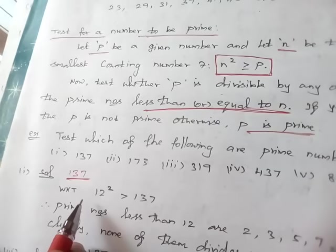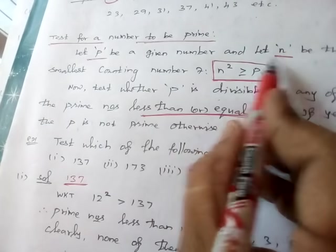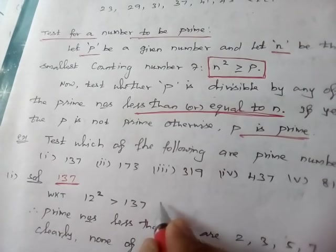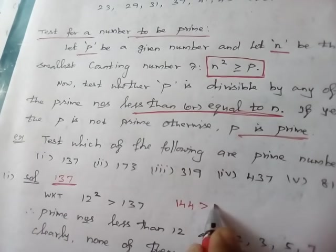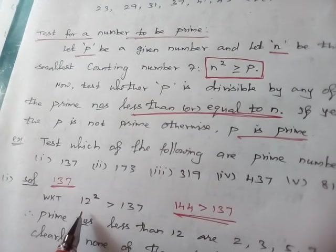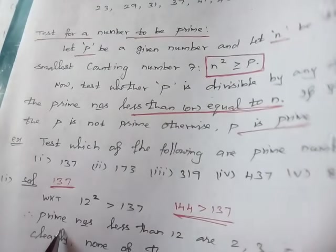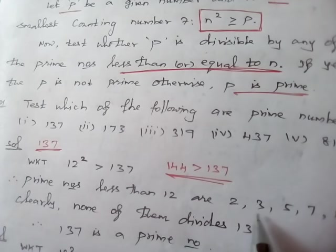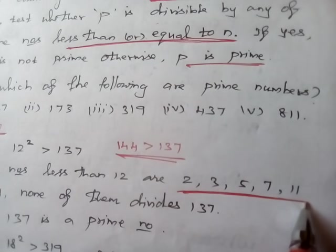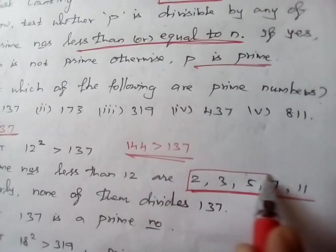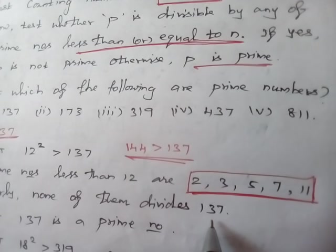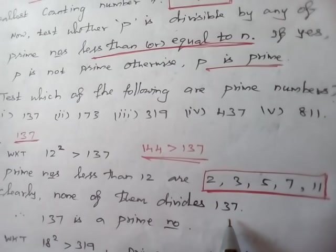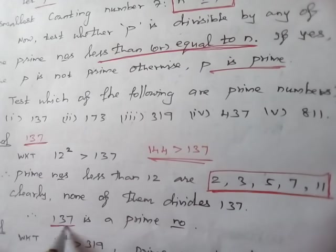Now we are going to check if 137 is prime or not. Let n be the smallest counting number such that n squared is greater than or equal to p. Here, 12 squared equals 144, and 144 is greater than 137. So n equals 12. The prime numbers less than or equal to 12 are: 2, 3, 5, 7, and 11. Among these factors, none of them divides 137. So 137 is a prime number.